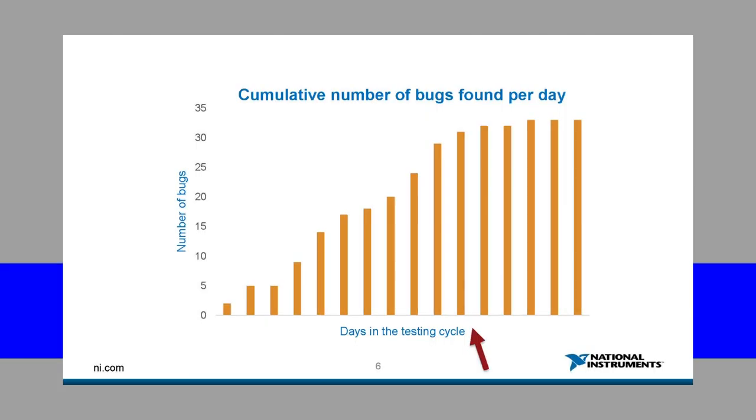At the end of the testing cycle, we found a few bugs. The graph doesn't really show the trends, so I put the same amounts to a cumulative function, so adding the numbers together. So at the first day, we are at two bugs, at the second day, at four. The third day, as you can recall, no bugs were found, so the function is flat, and it's increasing.